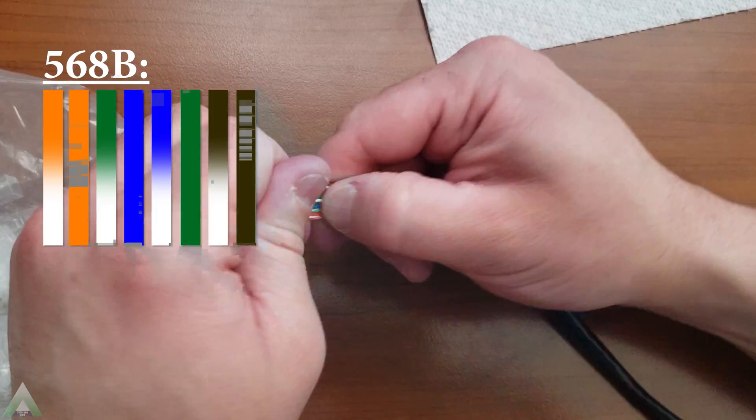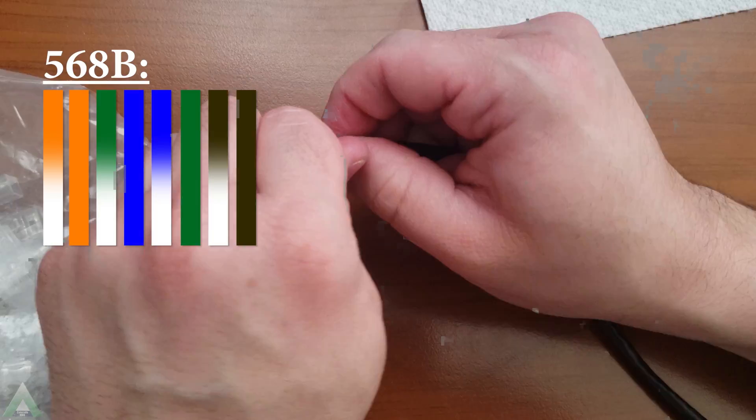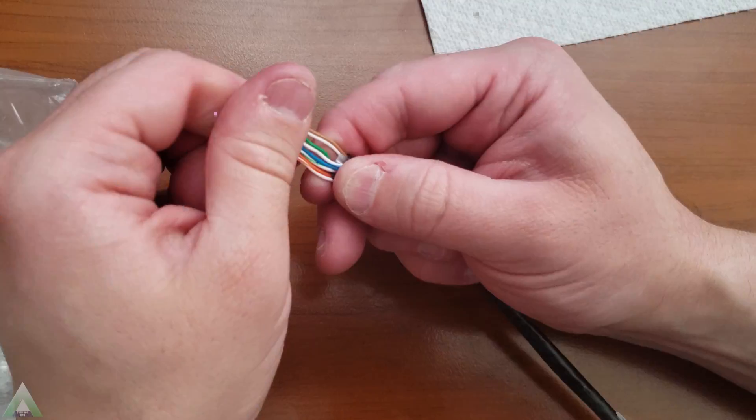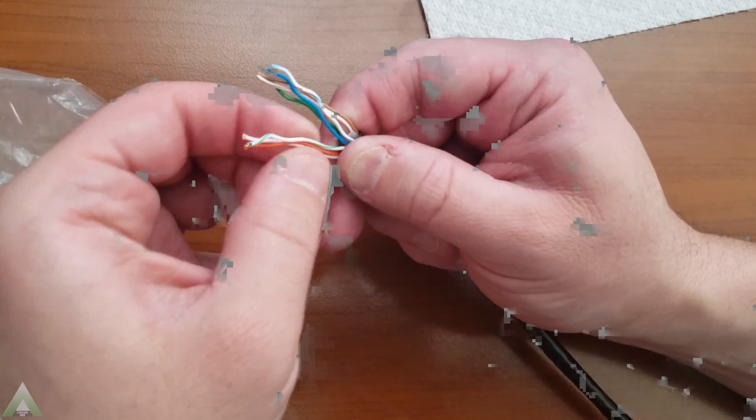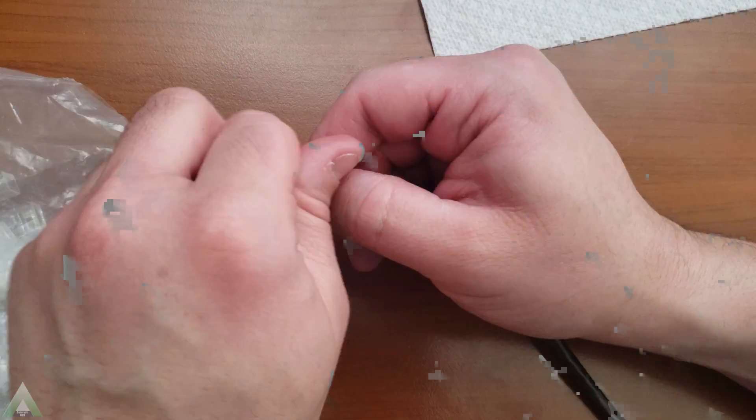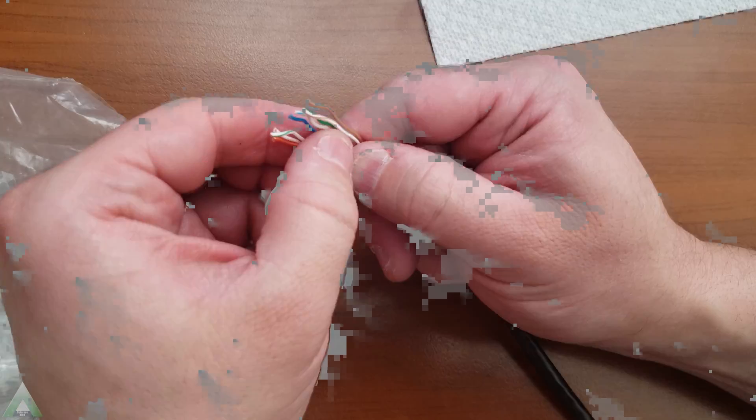Again we're gonna make sure that they are all arranged correctly. Orange white, orange, green white, blue, blue white, green, brown white, brown. Alright and now I think we're ready to cut them.